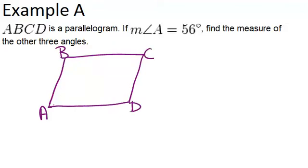So if the measure of angle A equals 56 degrees, find the measure of the other three angles. So if angle A is 56 degrees, that means that angle C must also equal 56 degrees, because in a parallelogram, opposite angles are congruent.